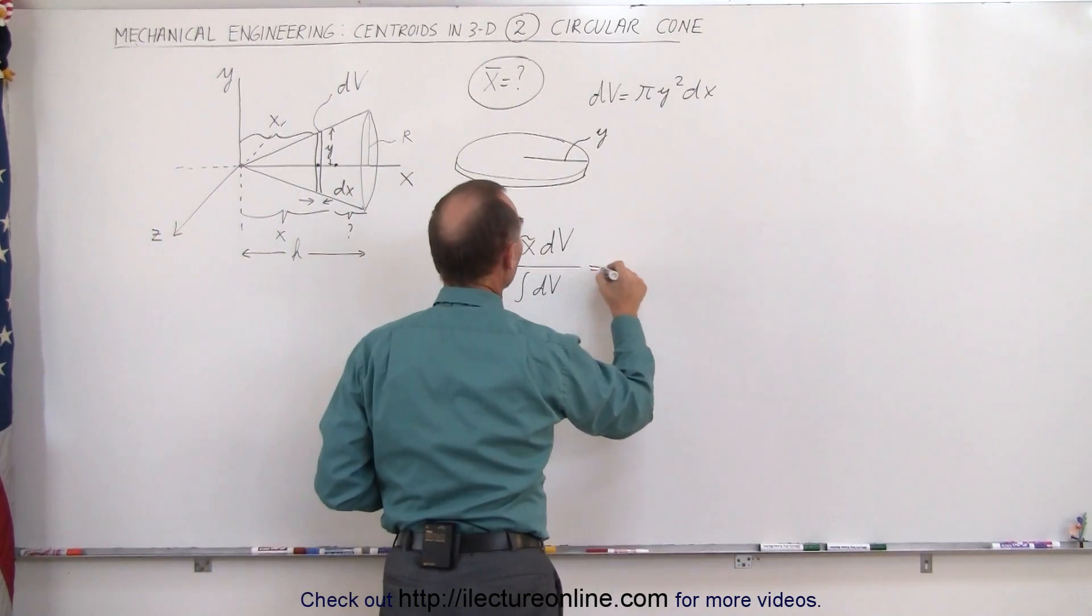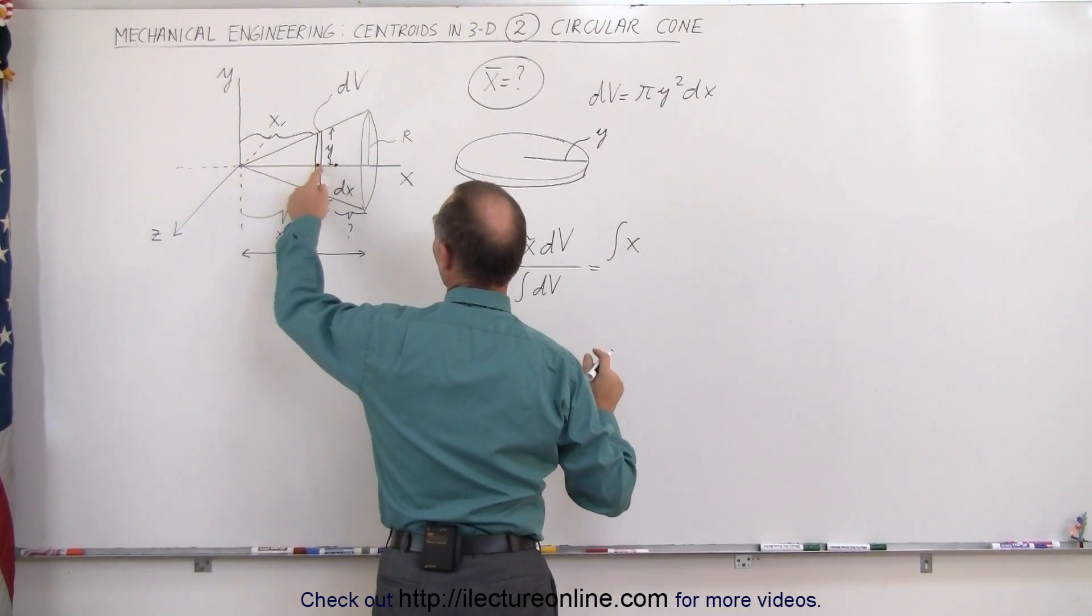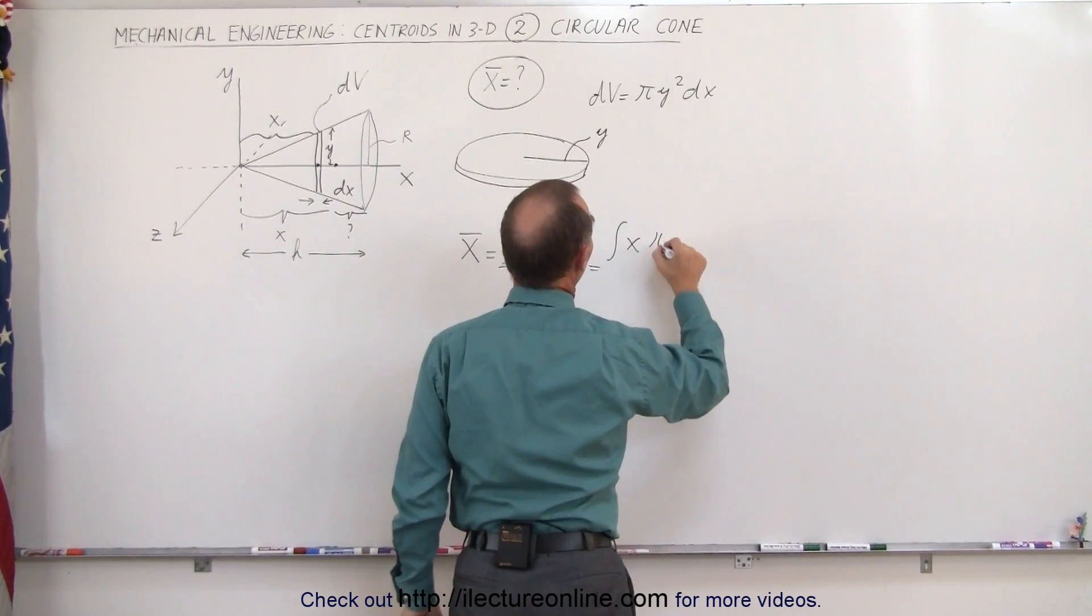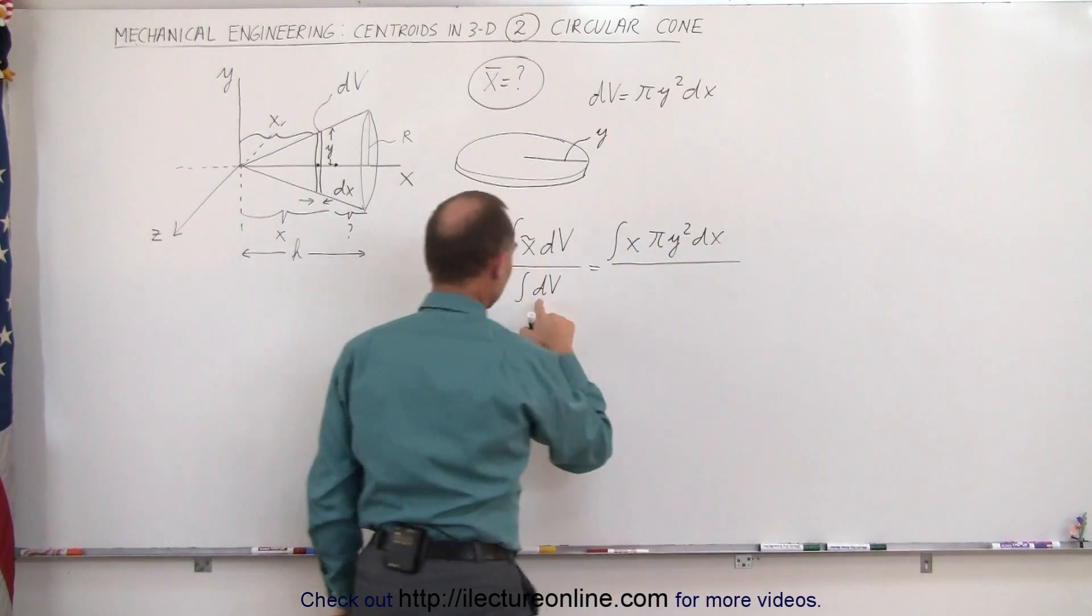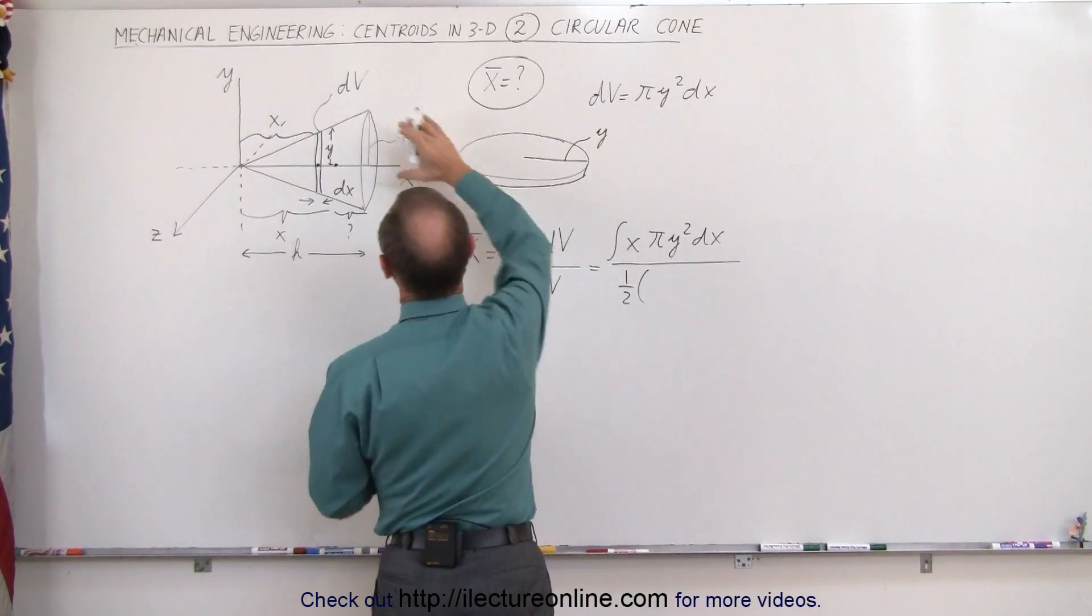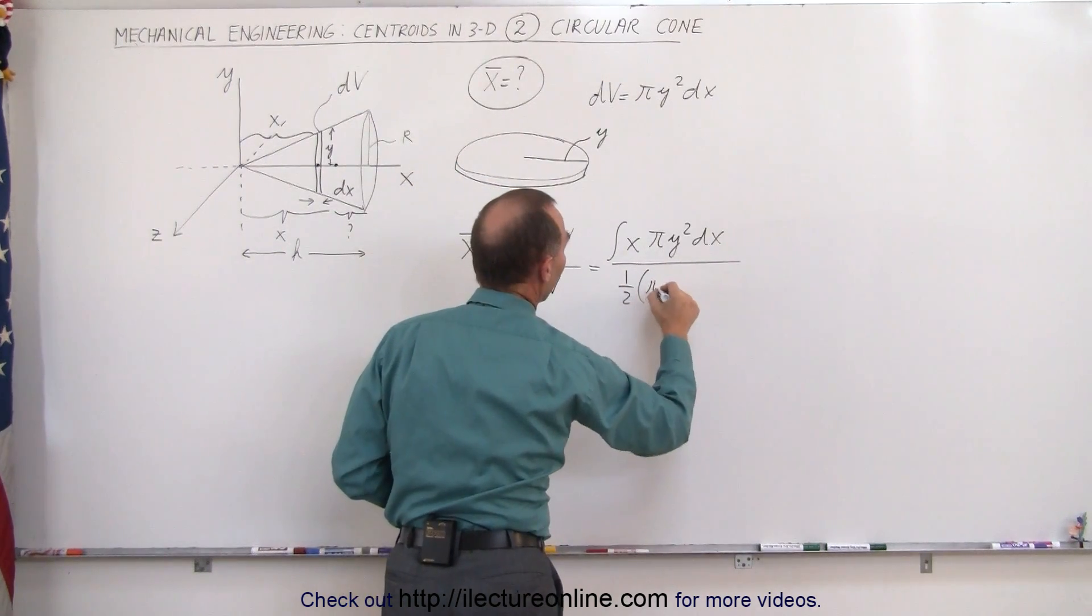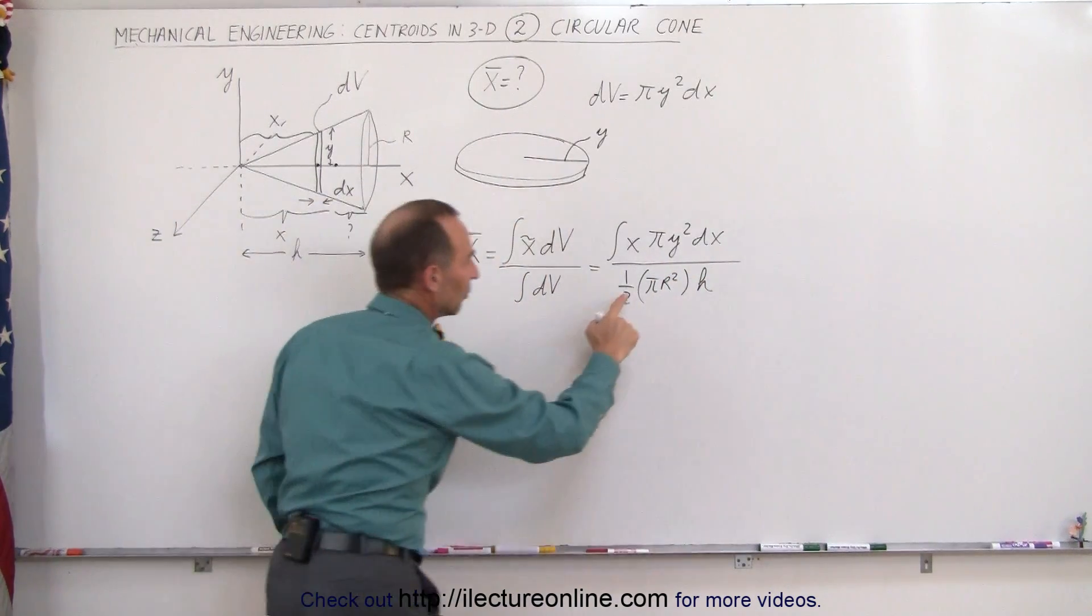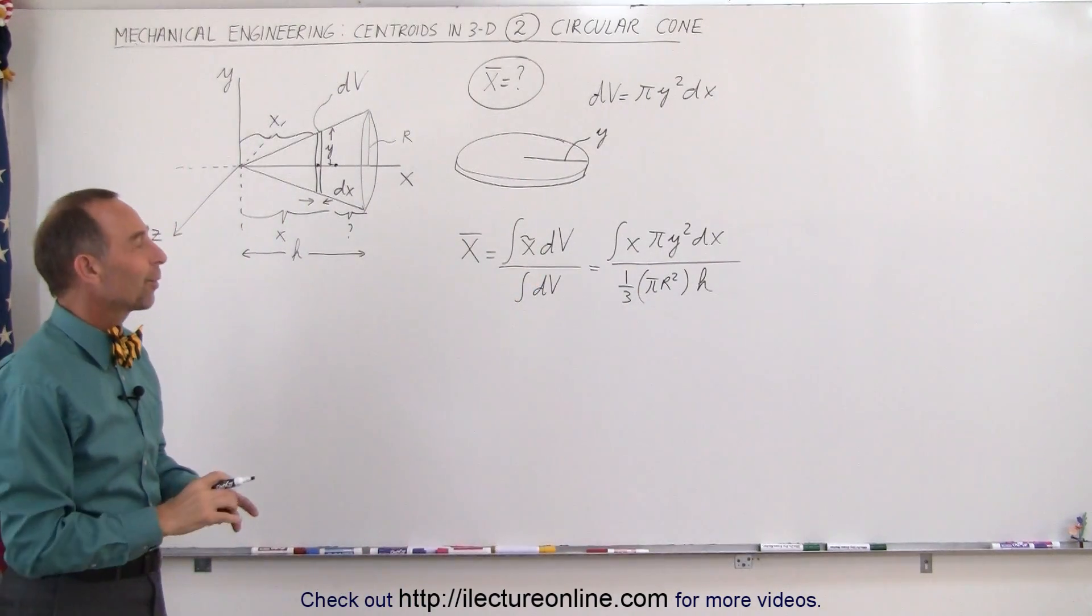Plugging what we have in the numerator, that's the integral of x, the centroid of that smallest slice of distance x away from the origin, times dv, and dv is π times y²dx divided by the volume of a right circular cone which is one-third times the base. Since the big R represents the radius of the base, that would be πr² times the height h. It should be one-third not one-half, one-third πr²h.